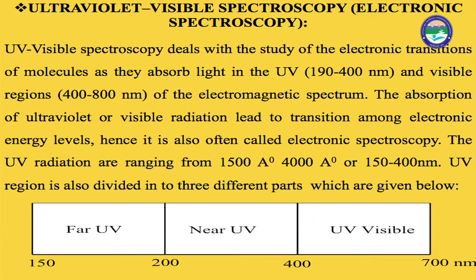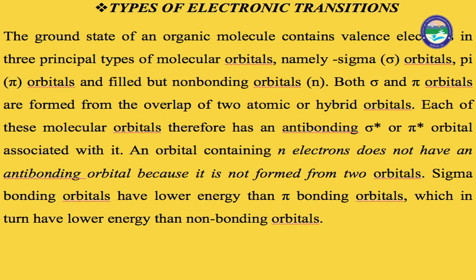UV spectroscopy is a type of electronic spectroscopy. Its main function is to find out conjugation and to describe the color of the compound. When we identify the color of any compound, it is done with the help of UV. This type of spectroscopy is based on electronic transition, and due to this reason it is known as electronic spectroscopy.